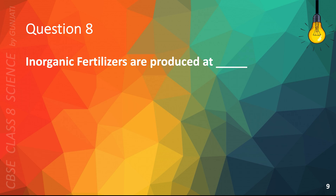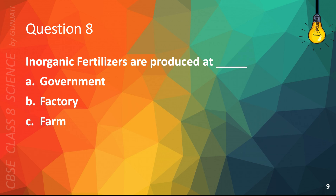Question 8. Inorganic fertilizers are produced at: A. Government, B. Factory, C. Farm, or D. Mall. The correct answer is B. Factory.